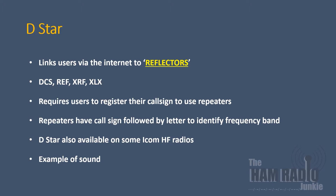The first digital mode we're going to explore is D-Star. D-Star users link to the internet into reflectors. Reflectors are a group of networks all interlinked, and they normally take the format of either DCS, REF, XRX or XRF. For instance, a user may decide to connect to reflector DCS002, which is the worldwide reflector. D-Star users are required to register their callsign to enable them to use repeaters or hotspots. Repeaters will have a callsign, which is normally followed by a letter that indicates the frequency band it's operating on. It's interesting to know that D-Star is also now available on some ICOM HF radios. Because D-Star is a digital mode, if you're listening on an analogue radio, this is all that you will hear.